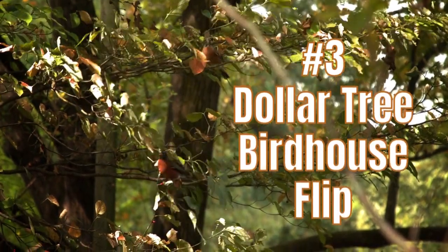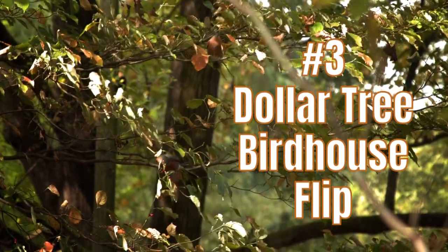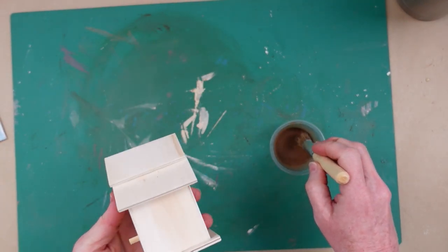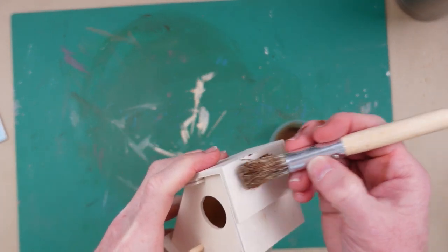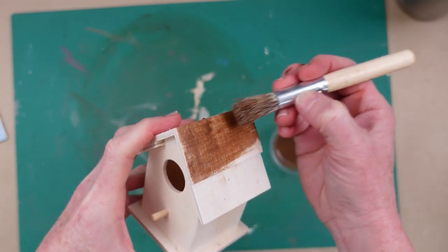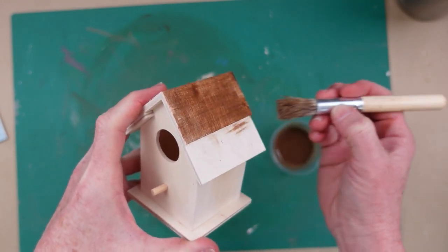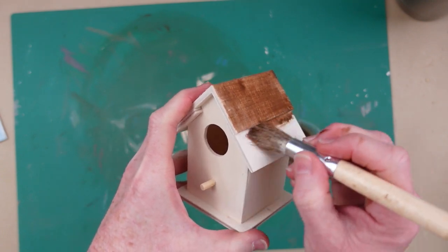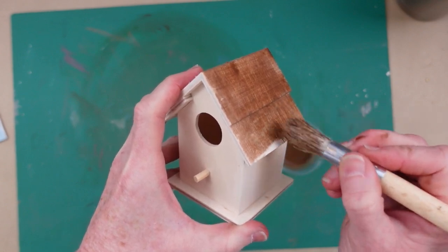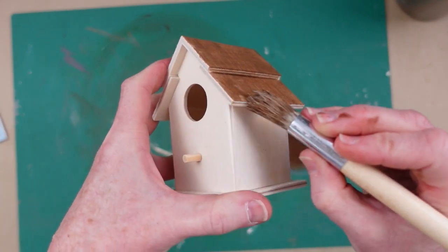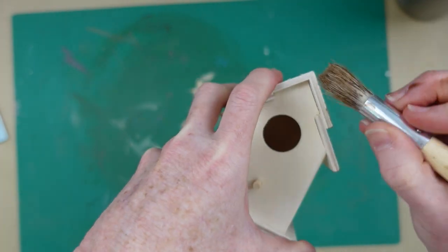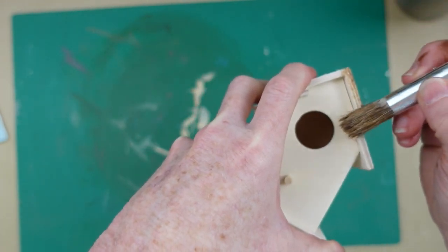Number three is our Dollar Tree birdhouse flip. This is so easy. This is probably the easiest one but it you know it does have a little little something to it. A little technique. A little effort. So I'm taking that same watered down antiquing wax and my brush and I'm just gonna go over the roof. I'm gonna give this a brown top. You don't have to do this. You can paint yours. You could use the solid wax technique like I used on the last birdhouse. You could even shingle this like we did on the first birdhouse.